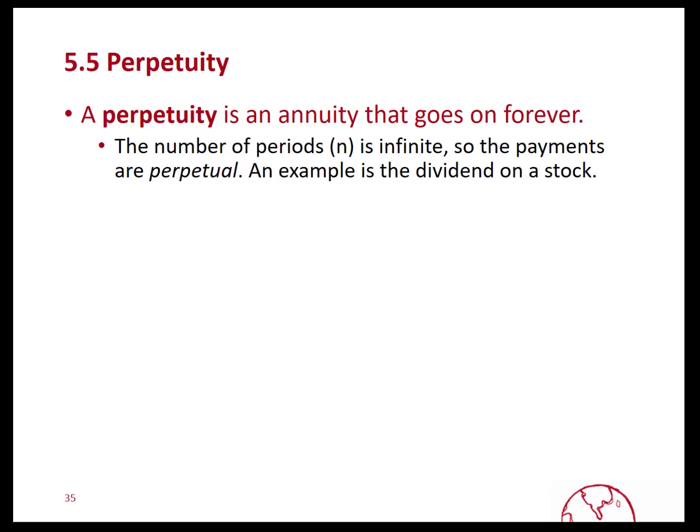A perpetuity is a type of annuity that goes on forever. It is infinite, which means the number of periods doesn't end. It is perpetual, thus the name perpetuity.